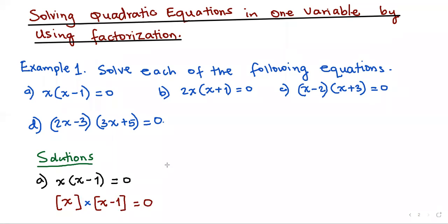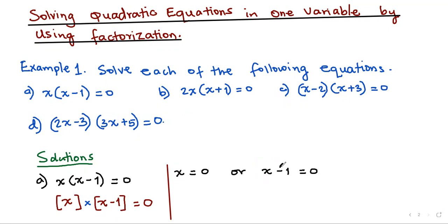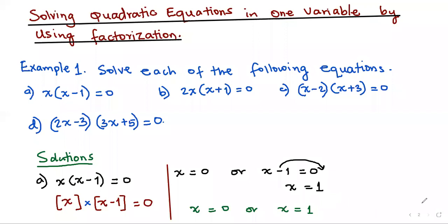This means that x equals zero, or x minus 1 equals zero. So x is already zero, and for x minus 1 equals zero, I will take minus 1 to the other side and get x equals 1. So the values of x are: x equals zero or x equals 1.